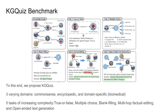To this end, we propose K-Decrease, a comprehensive benchmark designed to evaluate the knowledge abilities of large language models. Specifically, K-Decrease is constructed with information from knowledge graphs of three varying domains. For each knowledge graph, K-Decrease represents a collection of 41,000 knowledge-intensive questions, covering five tests of increasing complexity.